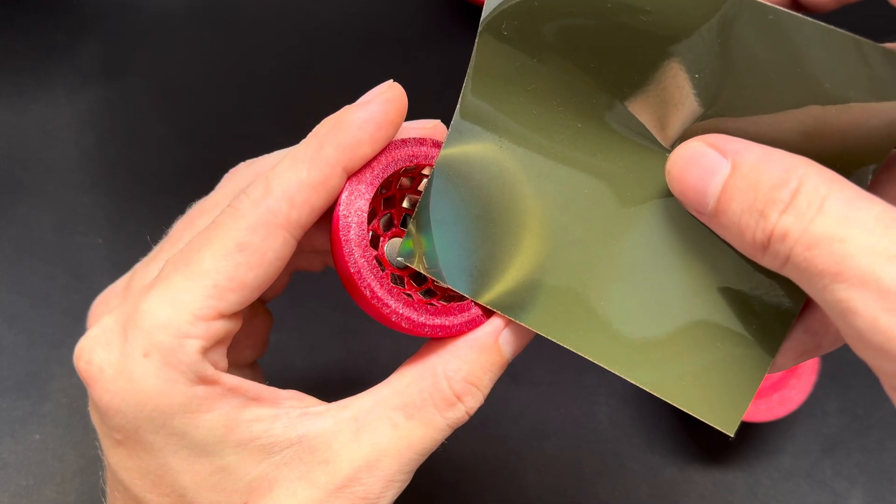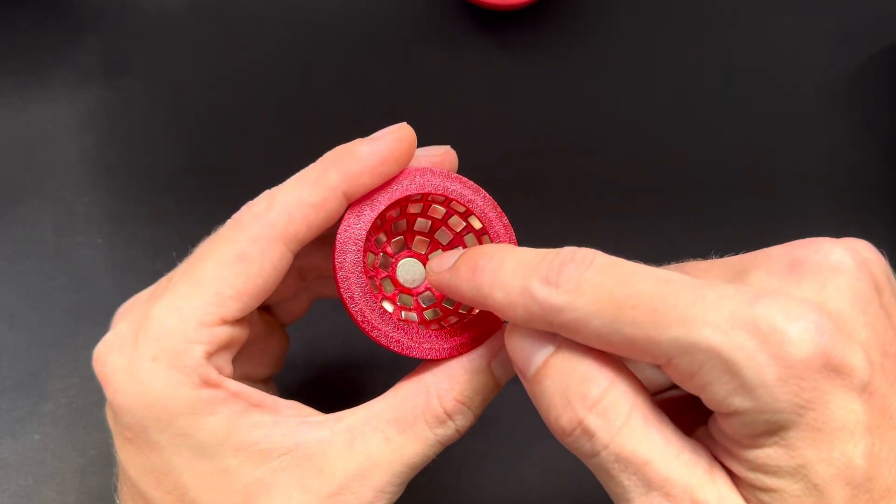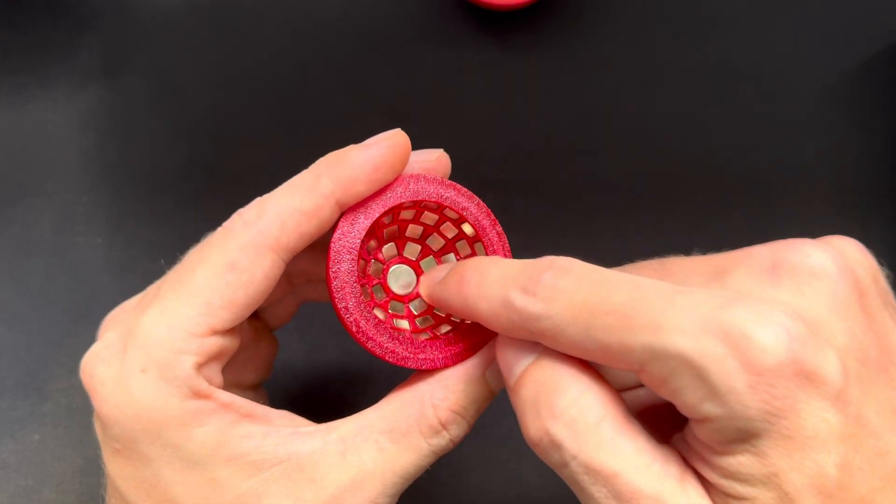And this separates the two polarities. So all around here we've got south pole and here on the inside we got north pole field.